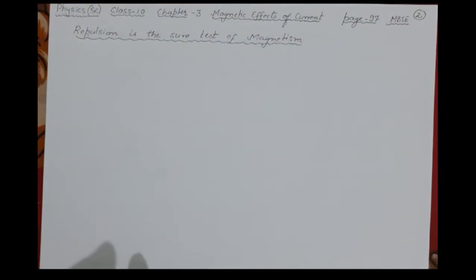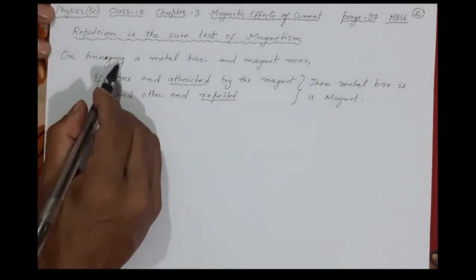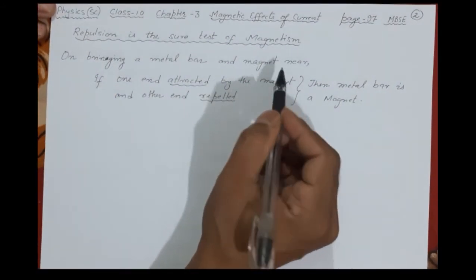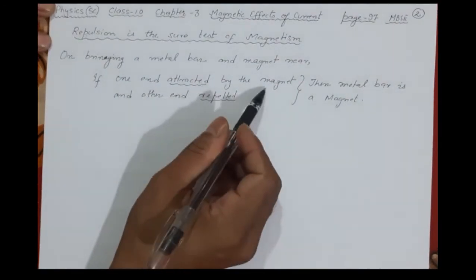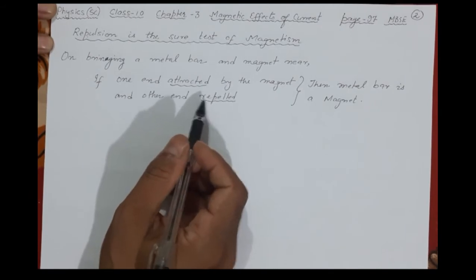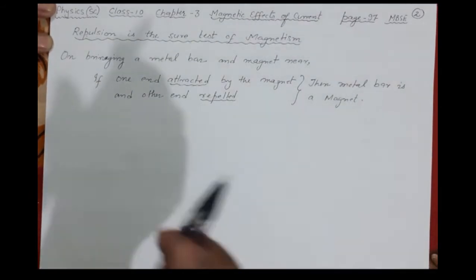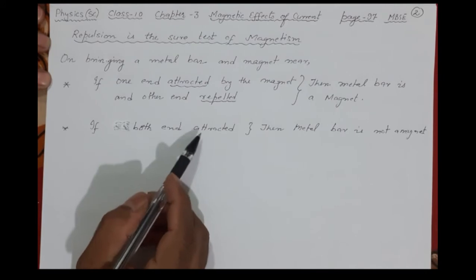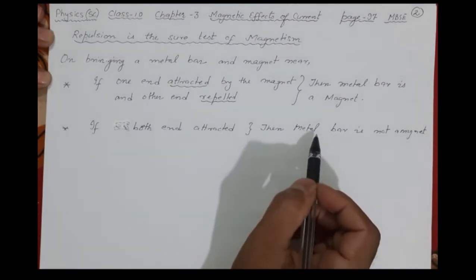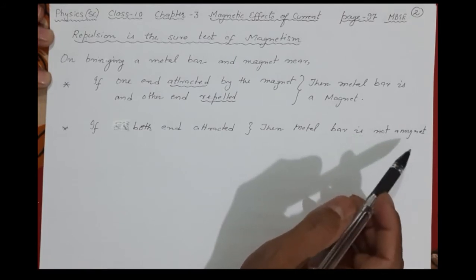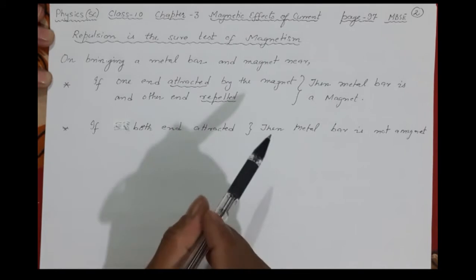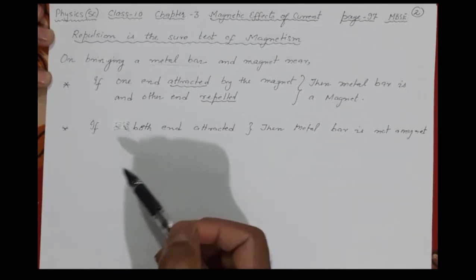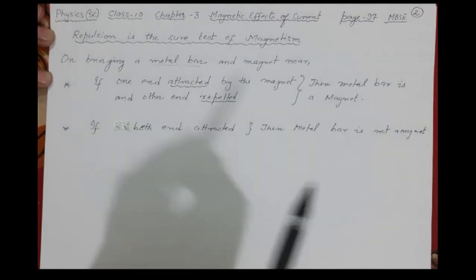Repulsion is the sure test of magnetism. If this is simply an iron object, it will attract on both sides. Now, on bringing a metal bar — one which is not known whether it is a magnet or not — close to a known magnet: if one end is attracted and the other end is repelled, then we can say the metal bar is also a magnet. But if both ends are attracted, the metal bar is not a magnet because it has no north and south poles of its own.